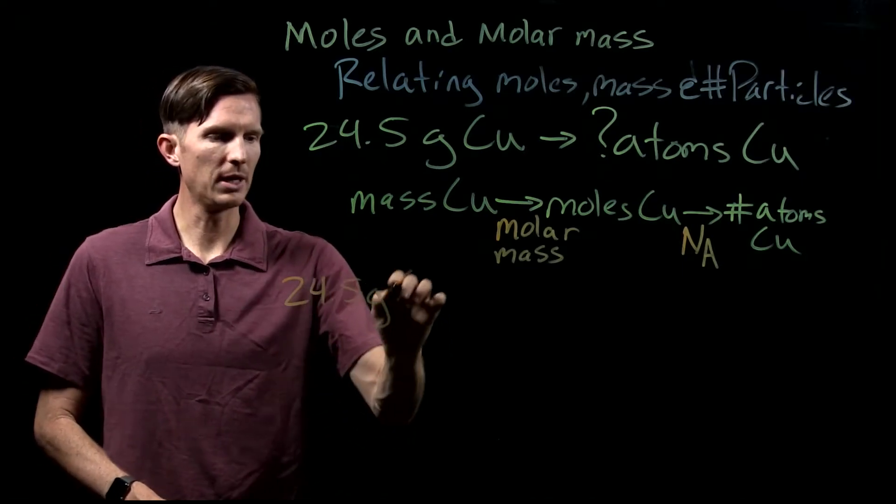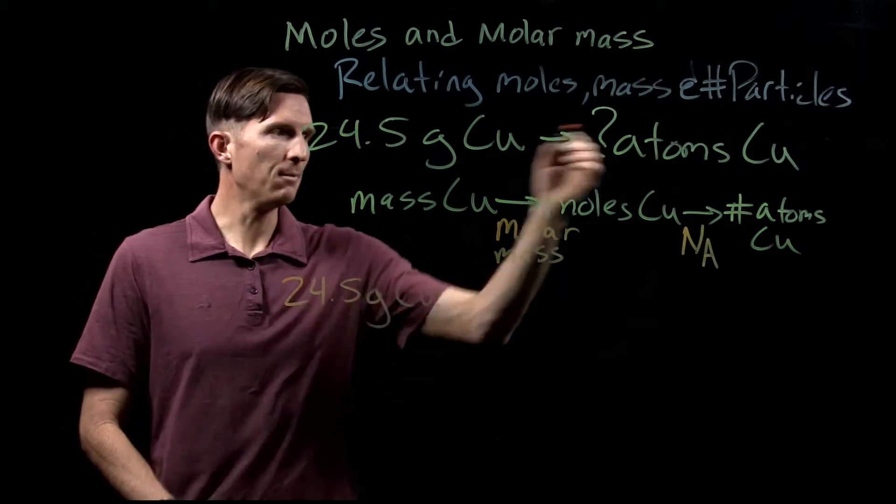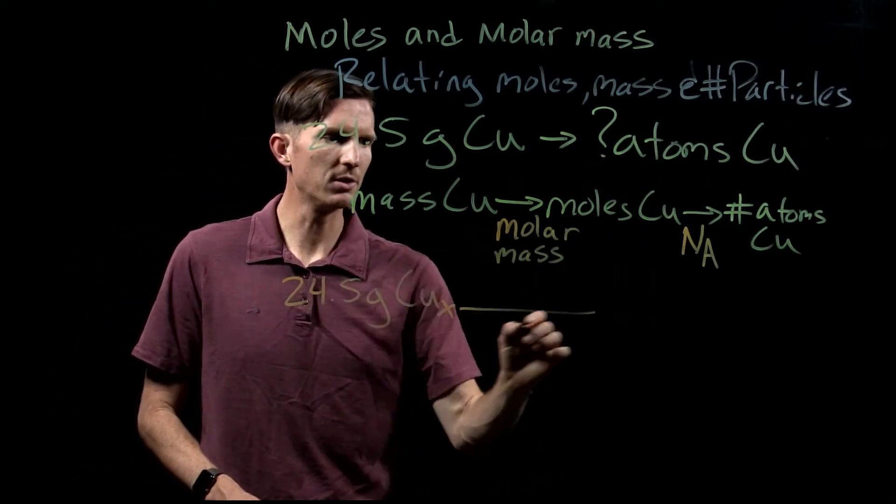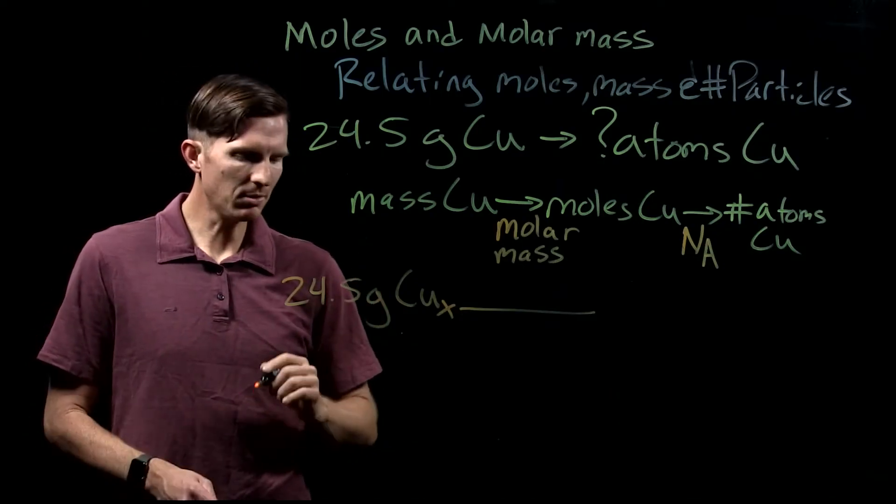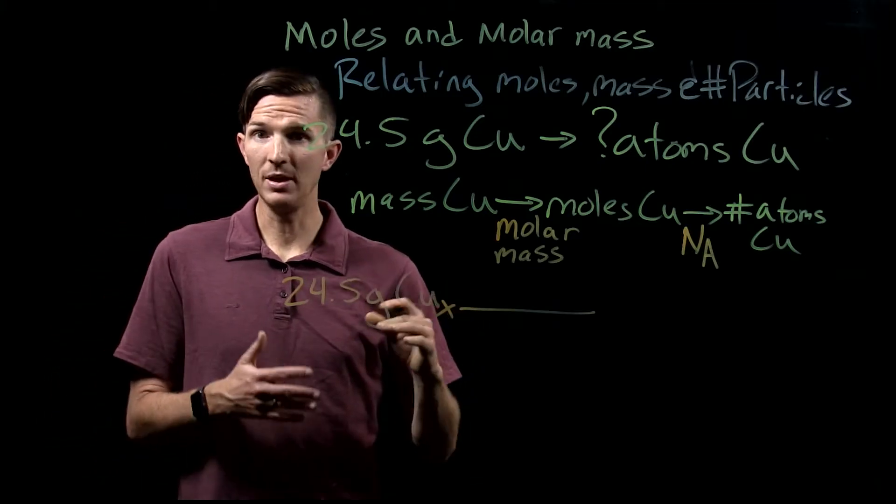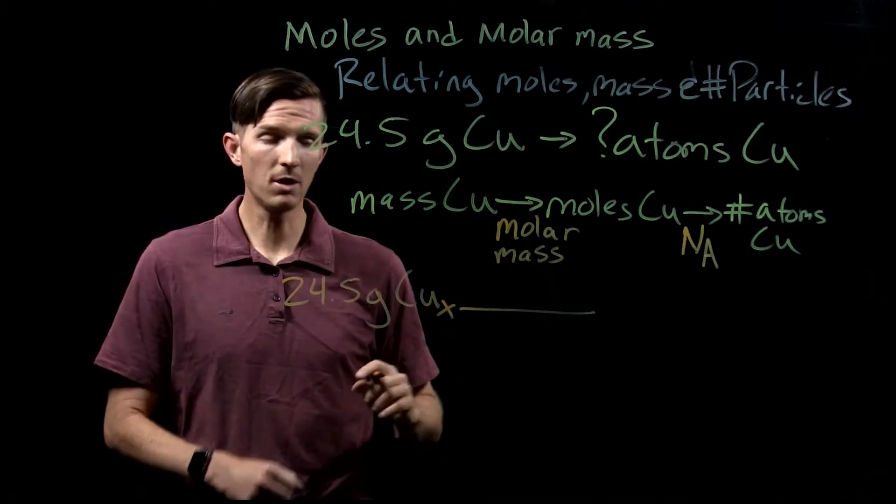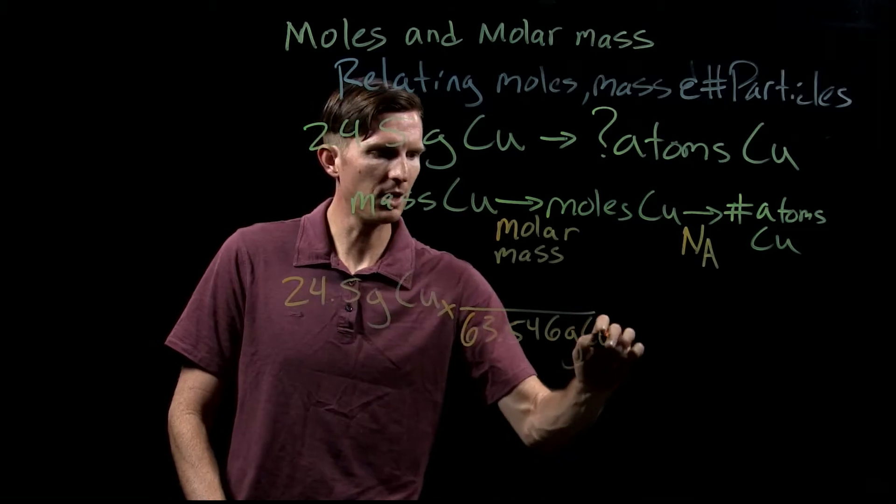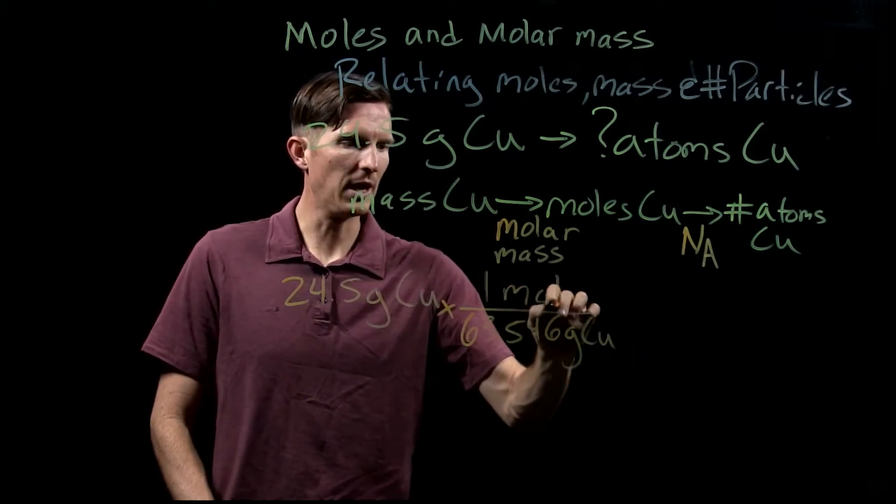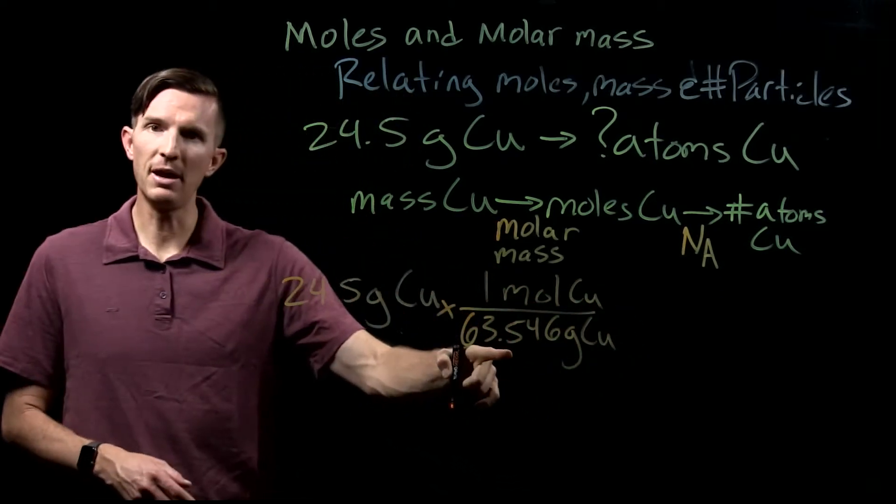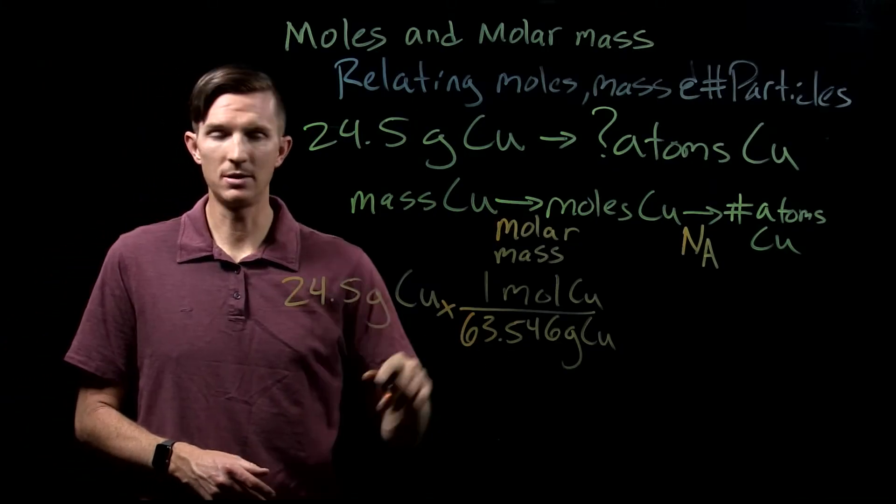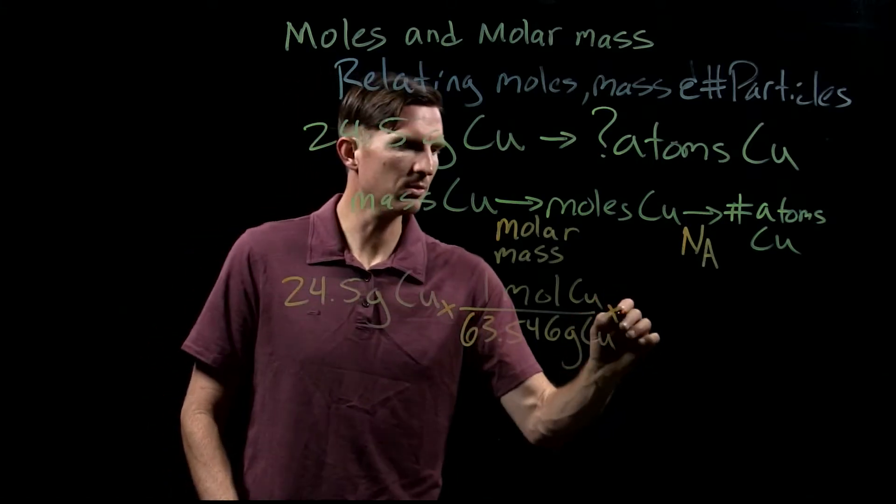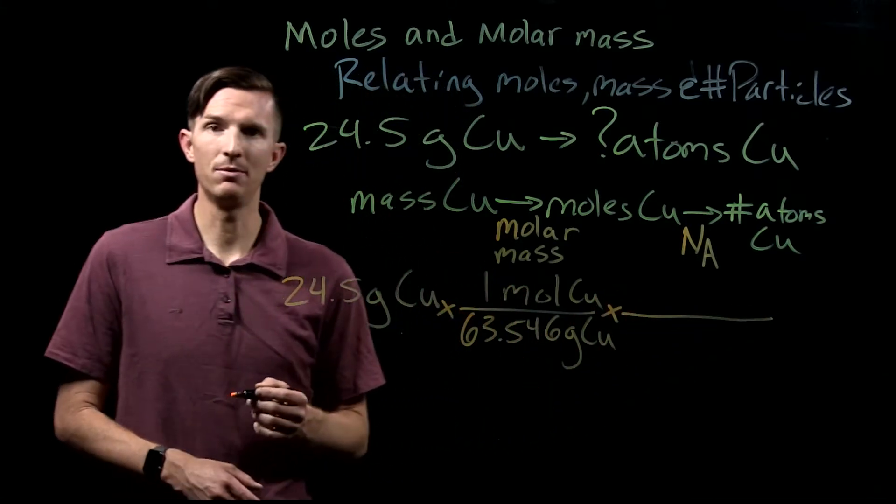We had 24.5 grams of copper, and we want to figure out how many atoms we have. To do that, we first want to convert to the number of moles. So we go to the periodic table and look at the molar mass of copper, and we find that we have 63.546 grams of copper for every mole of copper. I got that from the periodic table—it's atomic mass. Now this would tell me how many moles I would have, but I want to get to the number of atoms that we actually have of copper.